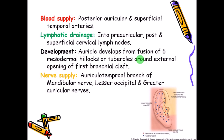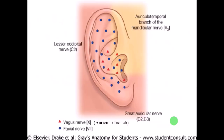The nerve supply of the auricle: this region is supplied by the auriculotemporal branch of the mandibular nerve. The posterior part of the pinna is supplied by the lesser occipital nerve, and the lowermost part is supplied by the greater auricular nerve. So these three nerves — the auriculotemporal branch of the mandibular nerve, the lesser occipital nerve, and the greater auricular nerve — supply the pinna.